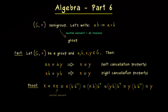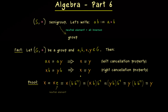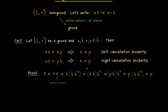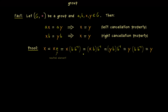The conclusion is: since the inverses exist, we can multiply with them and cancel the element. If someone tells you something about cancellation properties in groups, they mean these two implications. What we will show in this video is that the two cancellation properties already define the whole group.